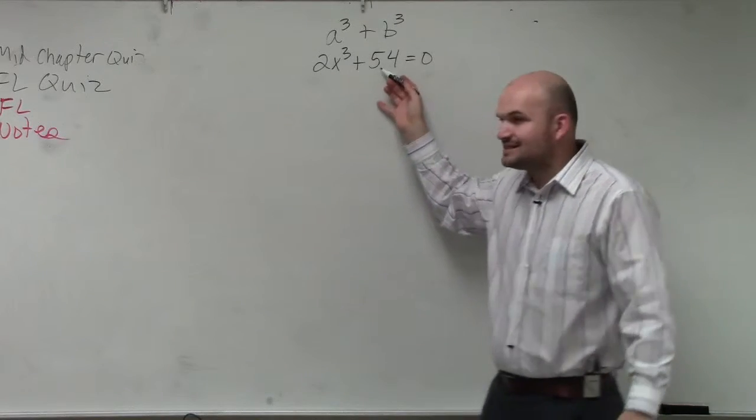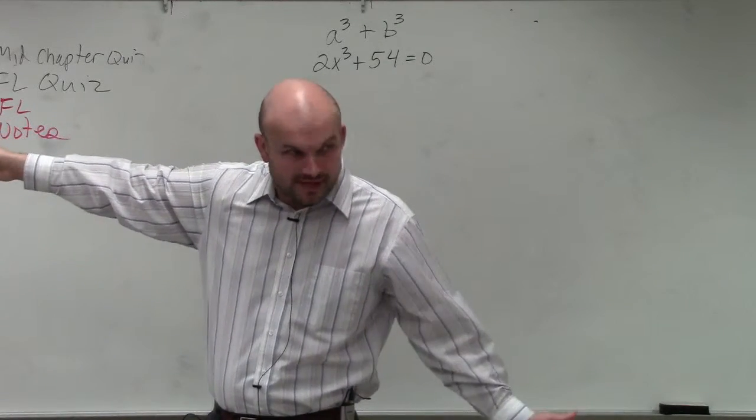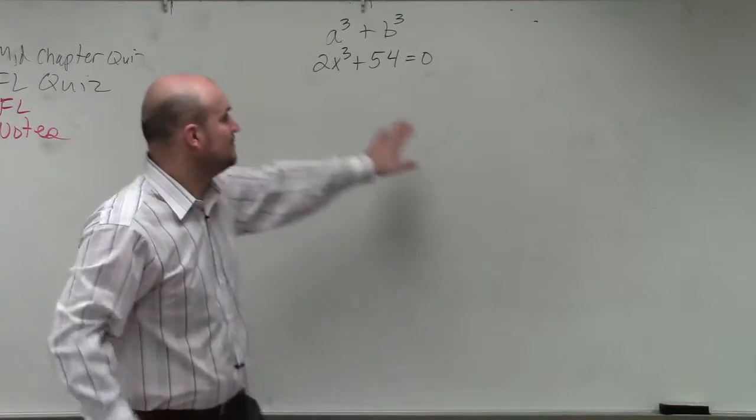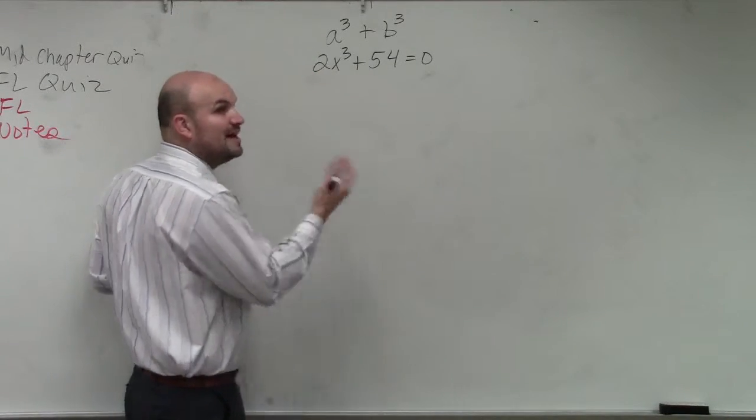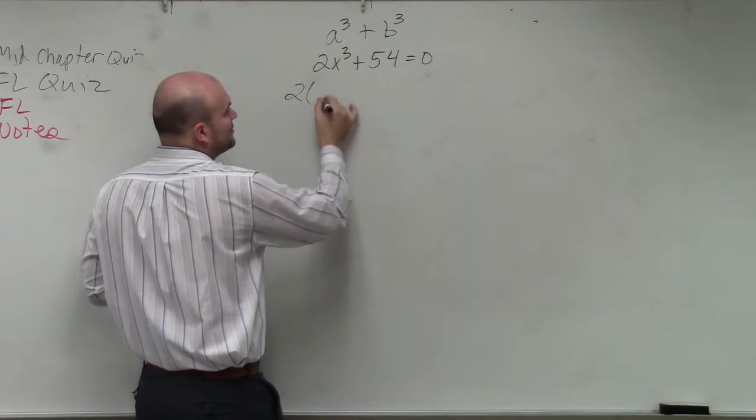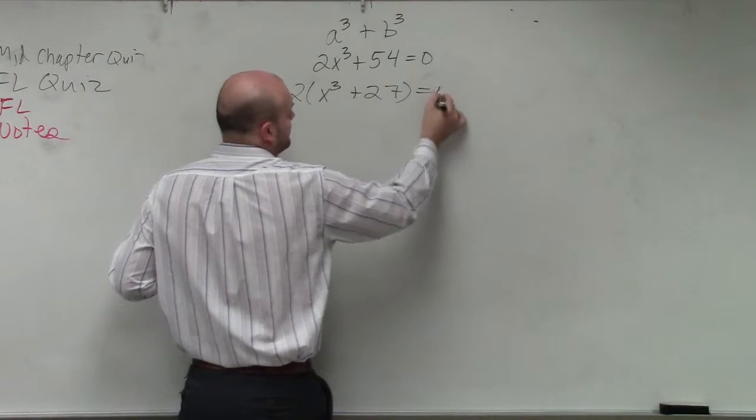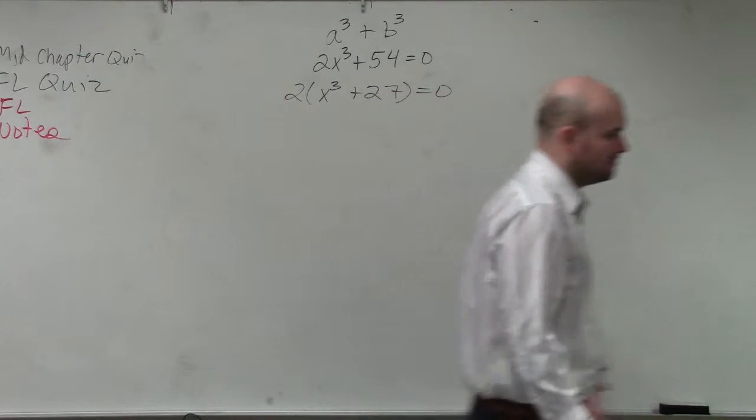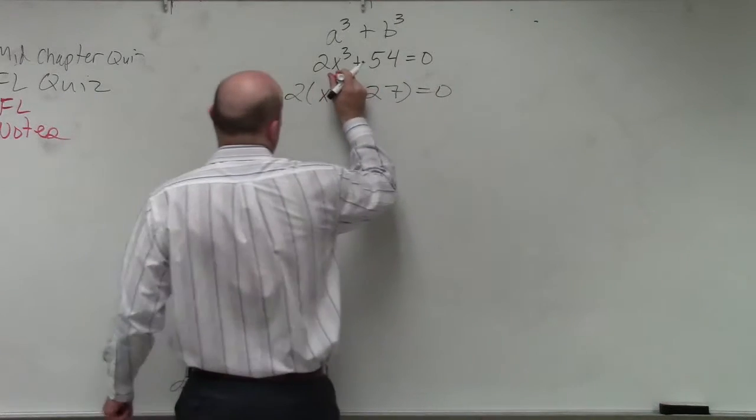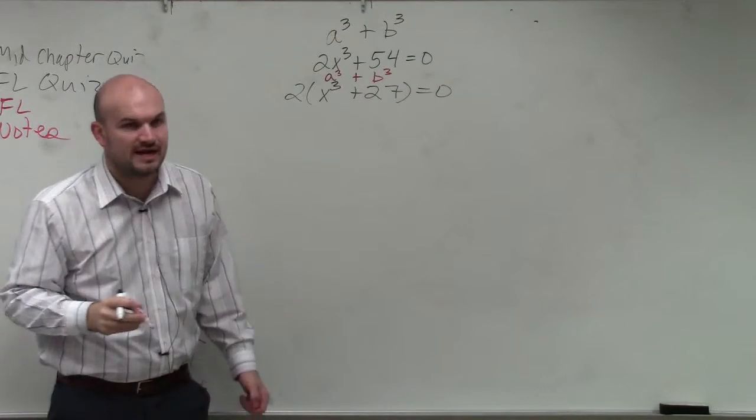Now, you can say, well, that's not cubed, because 54 is not a cubed number. So we want to look at, if it's not a cubed number, then can we possibly factor a number out to make it a cubed number? And you can see that they both share a 2. So if I factor out a 2, I'm left with x³ plus 27. Now I have this in the form of a³ plus b³. Does everybody understand?